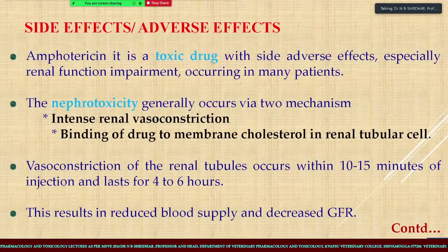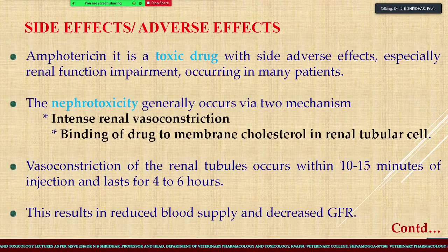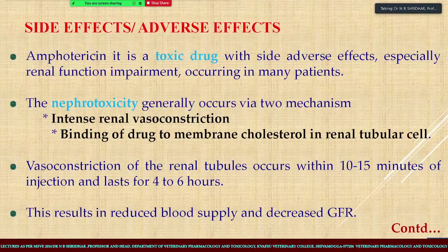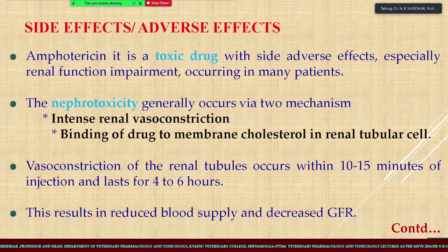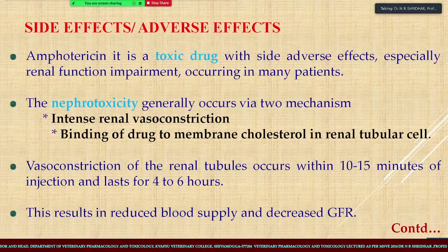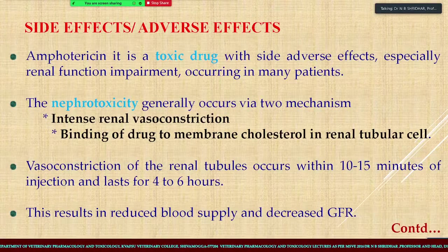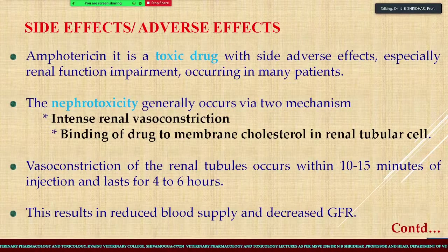This biphasic elimination refers to excretion of the drug with simultaneous disruption in the particular tissue. In human patients it takes more than two months for complete clearance of Amphotericin B. This prolonged half-life is one alarming feature because the concentration stays for more than two months.